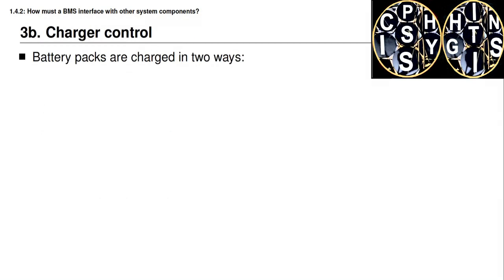Data frames are transmitted sequentially over a bus shared between many devices. When data frames are successfully received, an acknowledgement is sent back. If a data frame is not received at all there will be no acknowledgement, and so after some timeout period it's retransmitted. If the data frame has been received correctly, the acknowledgement is sent back to the original sender, and so the sender knows there's no need to retransmit.